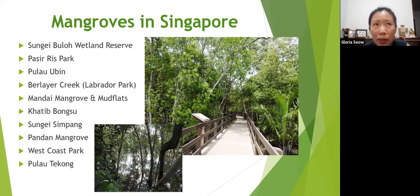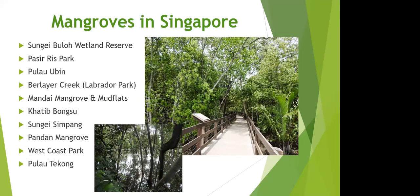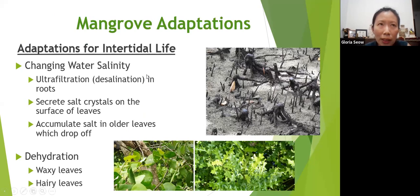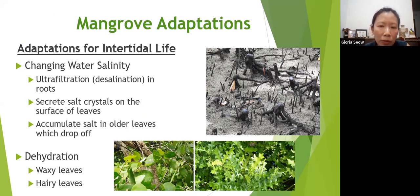Mangroves are adapted in various ways for this harsh condition. They are adapted for intertidal life where there is changing water salinity — salinity means saltish. Sometimes if there is heavy rain it becomes less saltish, but when there's a high tide coming in it becomes more saltish. The roots are able to do ultra filtration, meaning that they can filter out the salt and absorb only water.